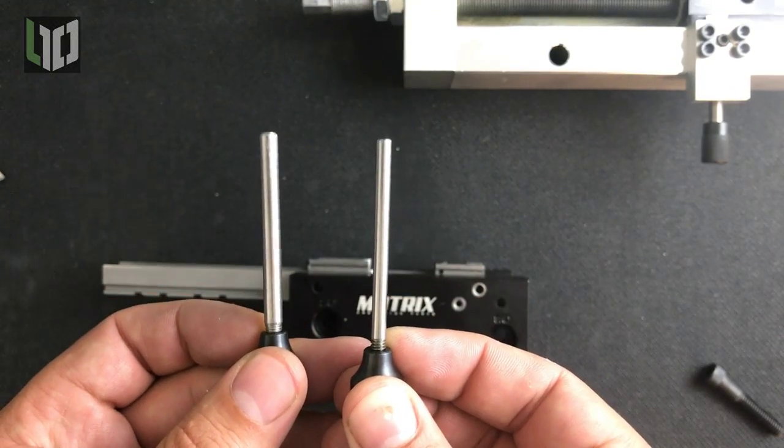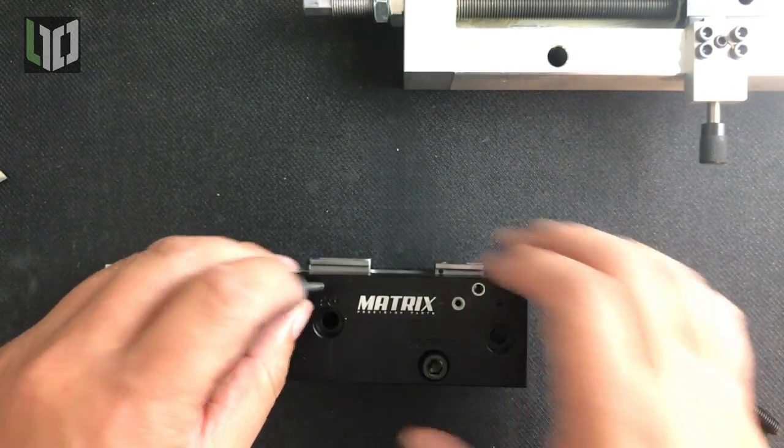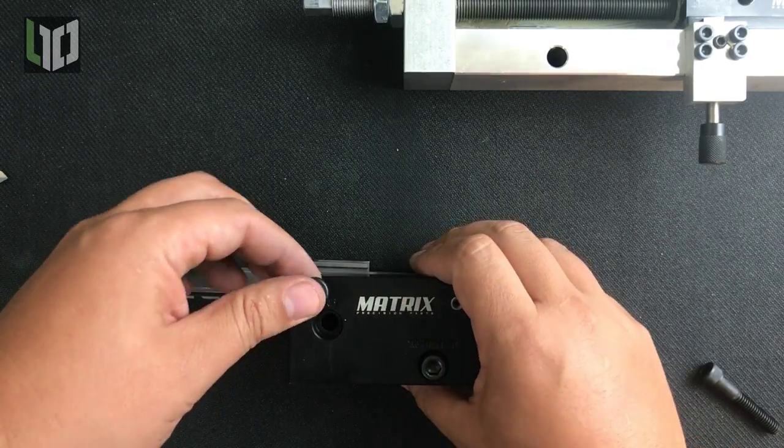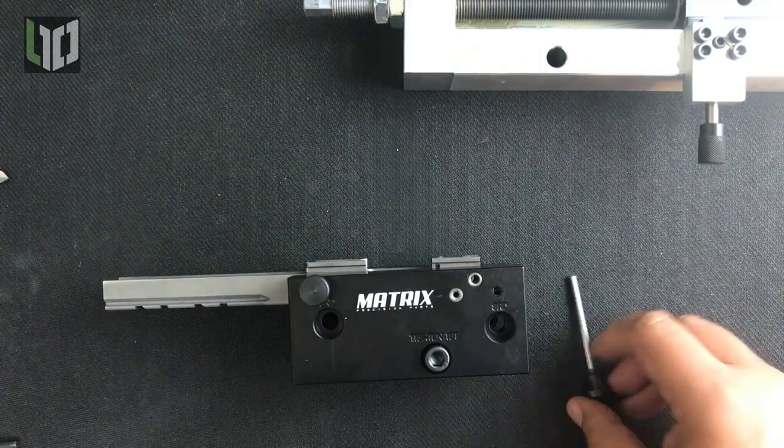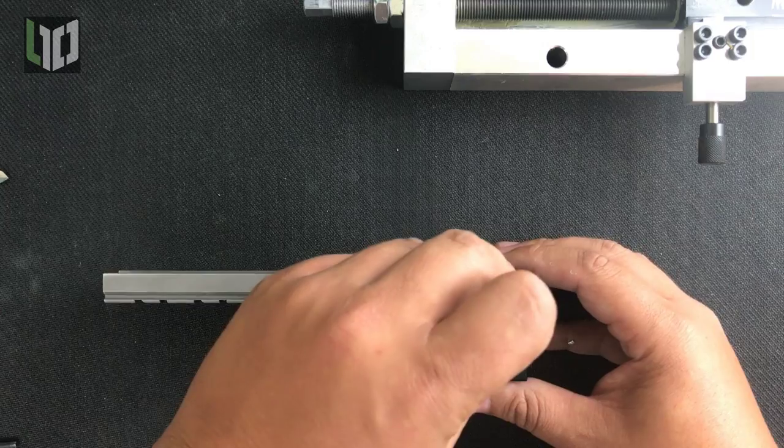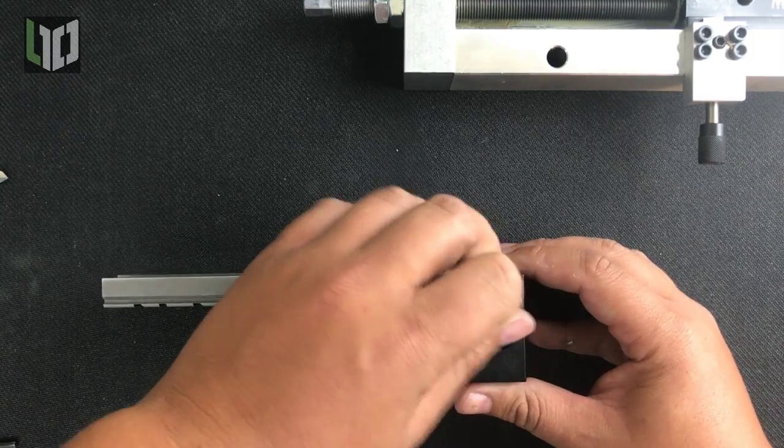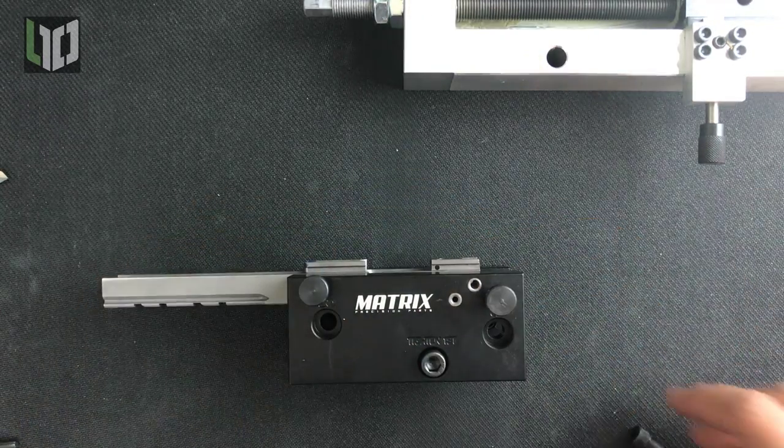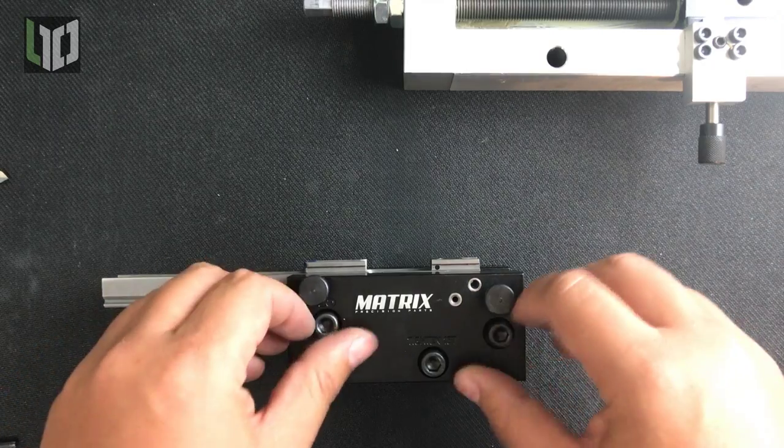Take your two steel alignment pins, the larger for the slide stop pinhole and the smaller for the grip safety hole and insert them through both sides of the fixture and through the frame. This ensures the steel hold guides in the frame will be perfectly lined up for drilling the hammer and sear pin holes.